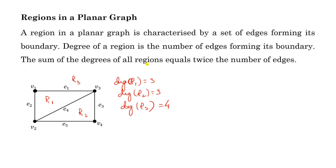The sum of degrees of all the regions equals twice the number of edges. This is easy to prove because each edge lies on the boundary of two regions. For example, E1 lies on the boundary of R3 and R1. So if you calculate the sum of degrees of all the regions, it equals twice the number of edges.